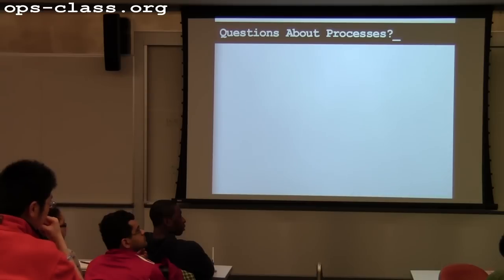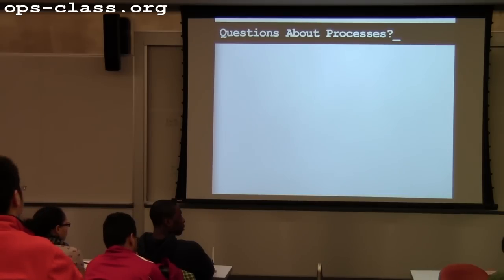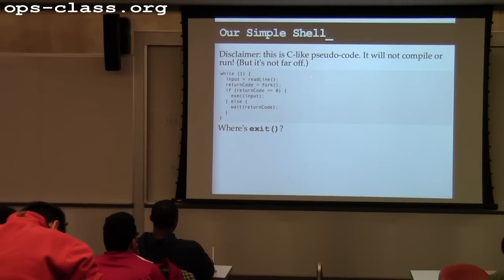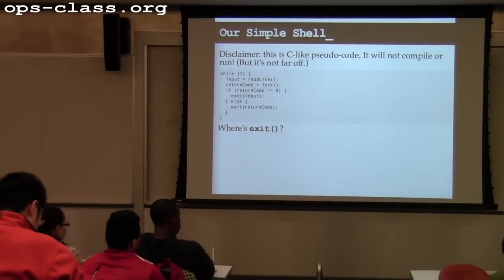Fork can fail — it frequently requires a fair amount of resources. If fork fails, it returns a negative return code. So what you'd really need to do is check: if the return code is zero, call exec; if greater than zero, call wait; if less than zero, then fork failed and you need to handle that error.